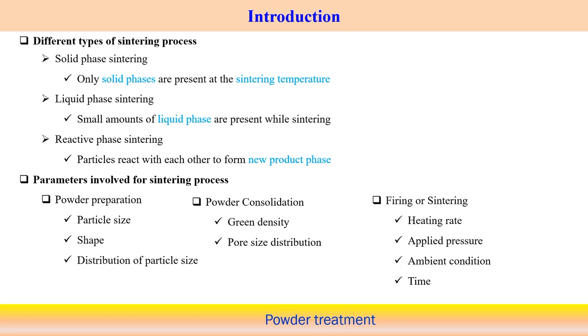There are different types of sintering process. Solid phase sintering means only solid phases are present at the sintering temperature. Liquid phase sintering means small amounts of liquid phase are also present during the sintering operation. Reactive phase sintering means particles react with each other and produce a new product phase — that is known as the reactive phase sintering process.